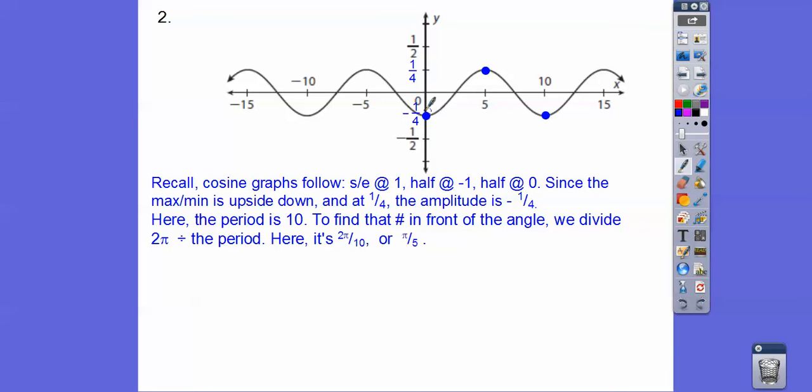The period here is 10 because one cycle of the cosine curve happens right here in 10. If we take 2 pi, which is our regular cosine curve, and divide that by 10, 2 pi divided by 10 is pi over 5. The amplitude is negative one-fourth because it's getting flipped. It's going down. Because cosine starts and ends at one, but this one's negative one-fourth because it's being flipped upside down. There's the equation right there.